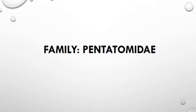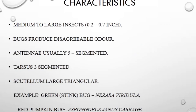Now we discuss the family belonging to order Hemiptera — Pentatomidae. Green stink bug, red pumpkin bug, and painted bug are examples of family Pentatomidae.